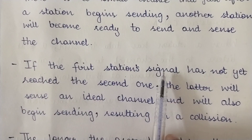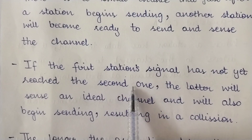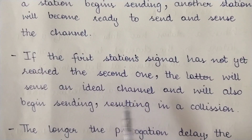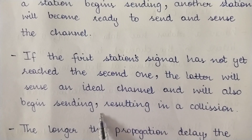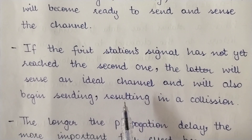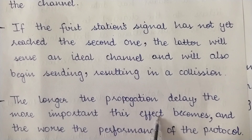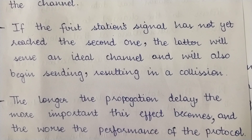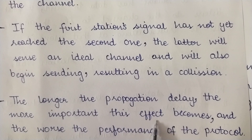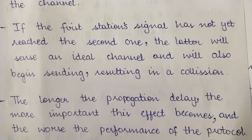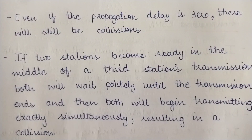If the first station sends a signal and it has not yet reached the second station through the communication medium, the second station will sense the channel as idle and begin sending too, resulting in a collision due to transmission from both sides. The longer the propagation delay, the more important this effect becomes — the more time it takes for a frame to travel between stations, the more collisions will occur and the worse the protocol's performance will be.